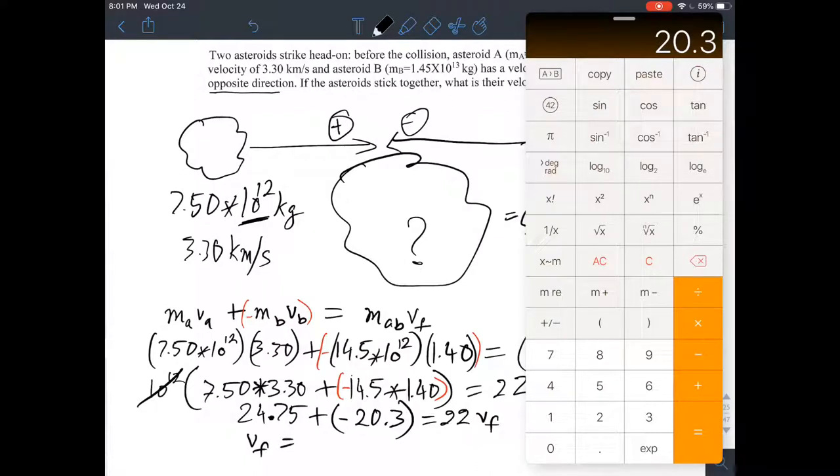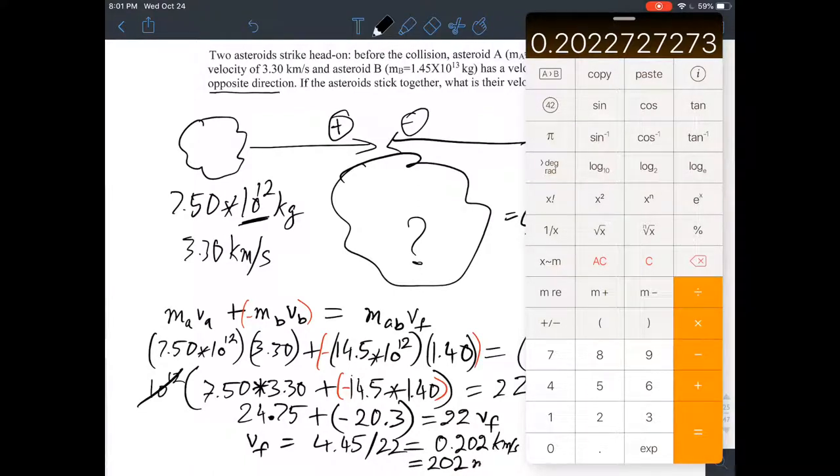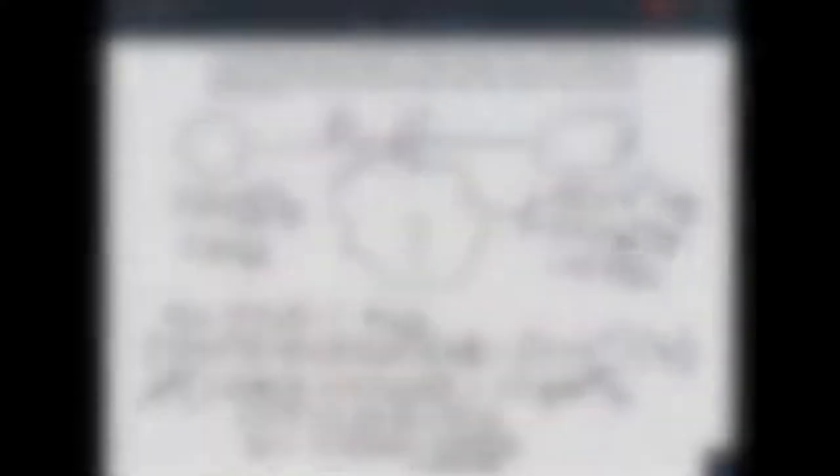And so, VF is equal to 24.75 minus 20.3. That's 4.45 divided by 22. And that should be something like, 0.202 kilometers per second, because that's the unit we stuck with. So, that's pretty much equal to 202 meters per second. That seems, unless there's something here I'm not seeing, that seems pretty straightforward. Thanks for watching.